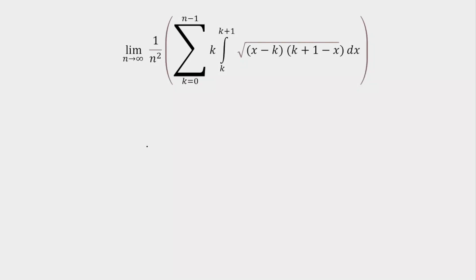Today we're going to do a mixed question on limits as well as definite integration. The question is: limit as n tends to infinity of 1 upon n square, summation of k varying from 0 to n minus 1, times the integration from k to k plus 1 of the following integral.